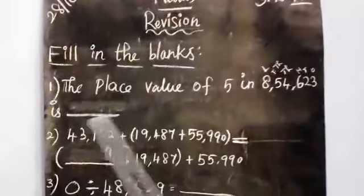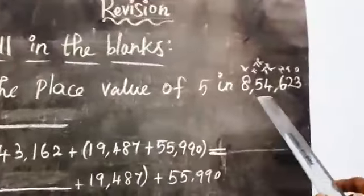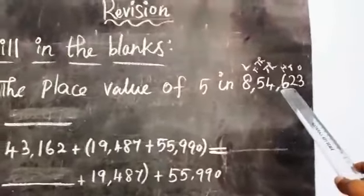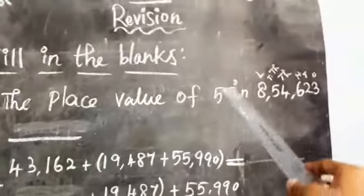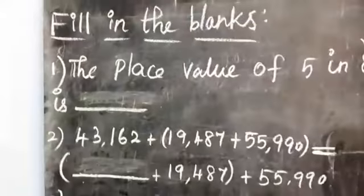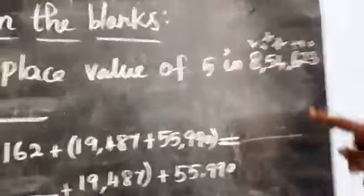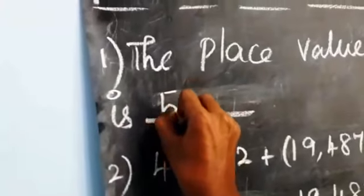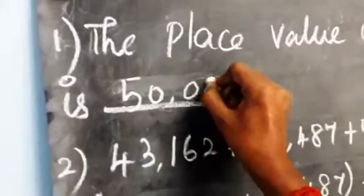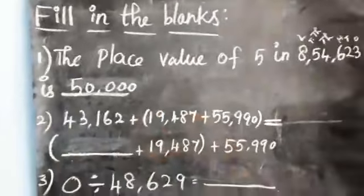First one: fill in the blanks. The place value of 5 in 8,54,623. The place value means the value of the digit depends on the position of the digit. Here 5 is in the 10,000s place, so we write 50,000.